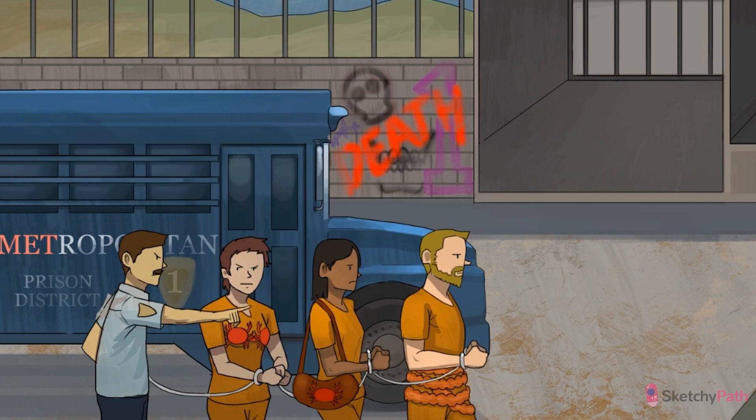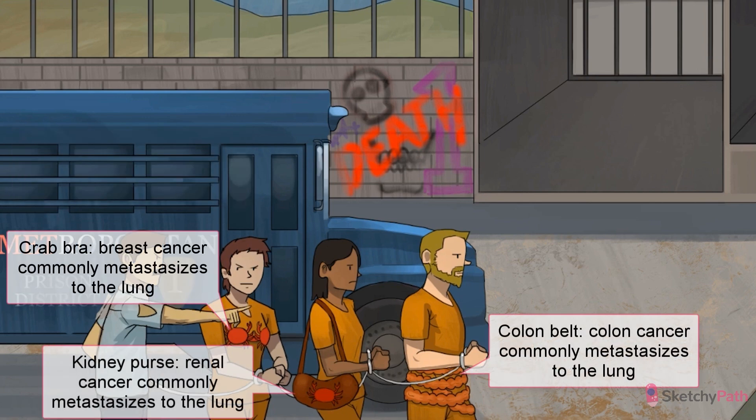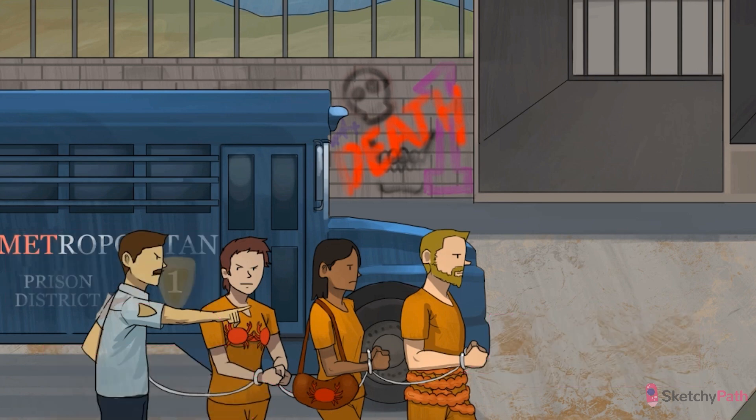Before we dive into lung tumors, you should know that by far the most common cancers found in the lungs aren't even made of lung tissue. Most cancers are actually metastases from other parts of the body, especially from the breast, colon, and kidneys. In this scene, however, we're going to focus on the most common primary tumors of the lung: small cell, adeno, squamous cell, and large cell carcinoma.